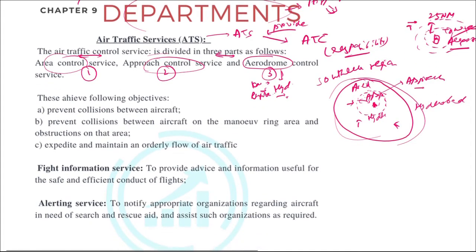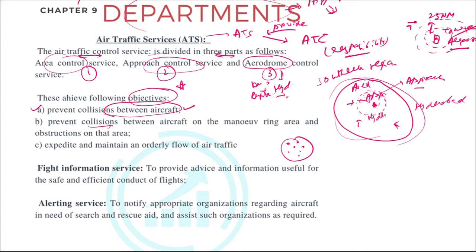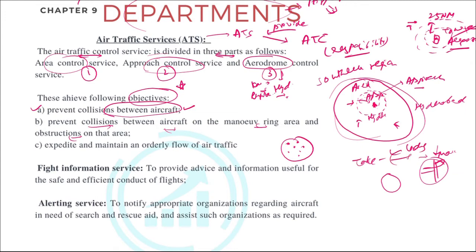The objectives of air traffic services are: they have to prevent collisions between aircraft. So many aircraft are flying in the region, and ATC has to control the movement of each aircraft to ensure there is no collision. One more objective is to prevent collision between aircraft on the maneuvering area and obstructions in that area — near the runway and taxiway, which is known as the maneuvering area.